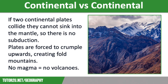The first type of convergence is continental versus continental. If two continental plates collide they cannot sink into the mantle, so there is no subduction. Instead the plates are forced to crumple upwards, creating fold mountains such as the Himalayas. This process can cause shallow focus earthquakes, but not volcanoes as there is no magma here. Over time fold mountains will continue to compress and grow higher.